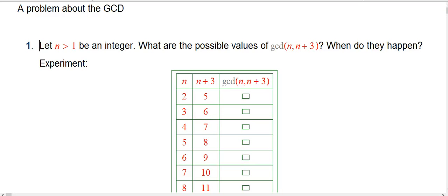So here's a problem about the greatest common divisor, the GCD. It's similar to some problems in section 3.4 in our book. I want to look at an arbitrary integer greater than one, just to be simple, to avoid a degenerate case. What are the possible values if I look at the greatest common divisor of that number and that number plus three? So they're spaced three apart, and what can happen with the GCD? And when do those possibilities happen?